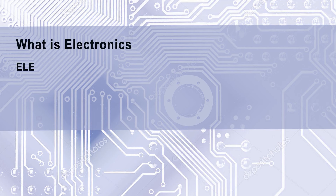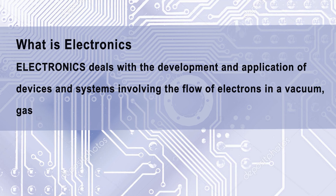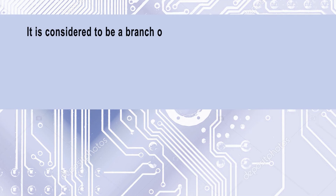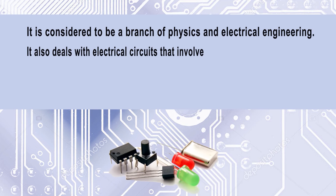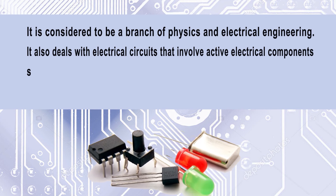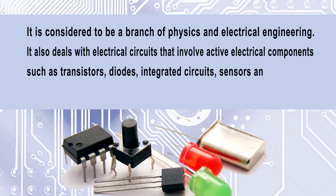Let us see what electronics is. Electronics deals with the development and application of devices and systems involving the flow of electrons in a vacuum, gas and semiconductors. It is considered to be a branch of physics and electrical engineering. It also deals with electrical circuits that involve active electrical components such as transistors, diodes, integrated circuits and associated passive electrical components.